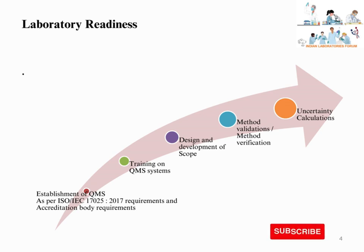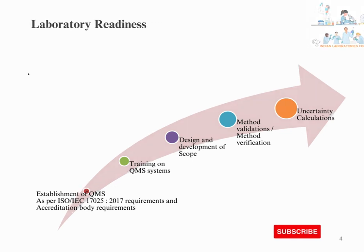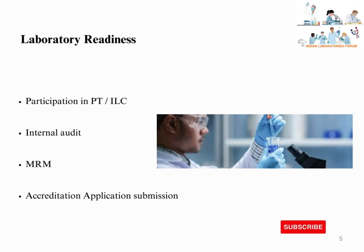The laboratory should decide on the products and test parameters for which it is willing to apply for accreditation, and design and develop the scope based on business needs. Upon designing the scope, the laboratory should perform method verifications or validations and calculate the measurement uncertainty for each parameter applying for scope of accreditation. Upon completion, the laboratory should participate in proficiency testing programs from ISO 17034-accredited PT providers, or if no PT providers are available, initiate or participate in an interlaboratory comparison program.